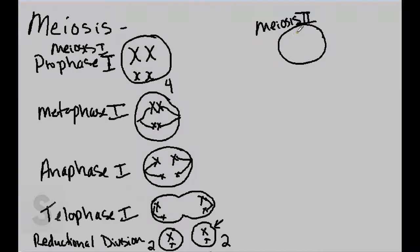In meiosis II, again, we have prophase II, where our chromosomes are coiled up.